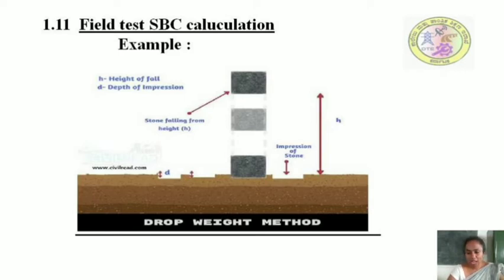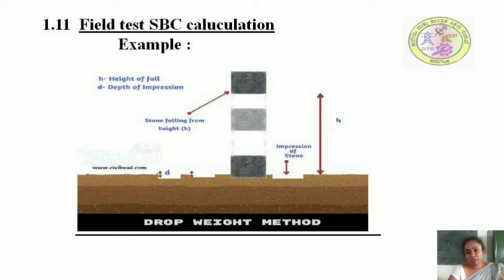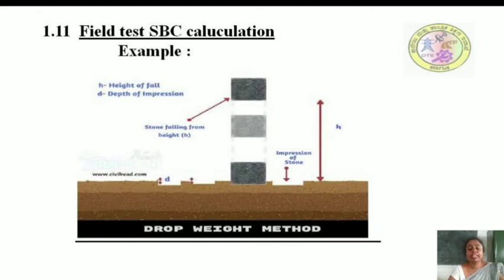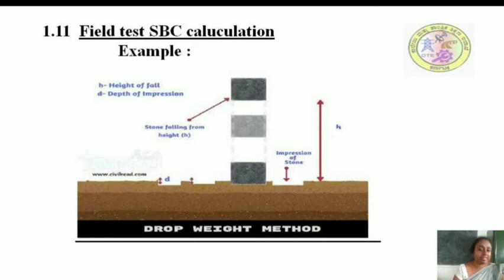I will explain the procedure for the drop weight field test for calculation of SBC of the soil. First, excavate to the required depth. Next, take a known-dimension iron cube or concrete cube. Drop it from a known height. When you drop the cube, it creates an impression in the soil. Note down the depth of the depression created by the cube.